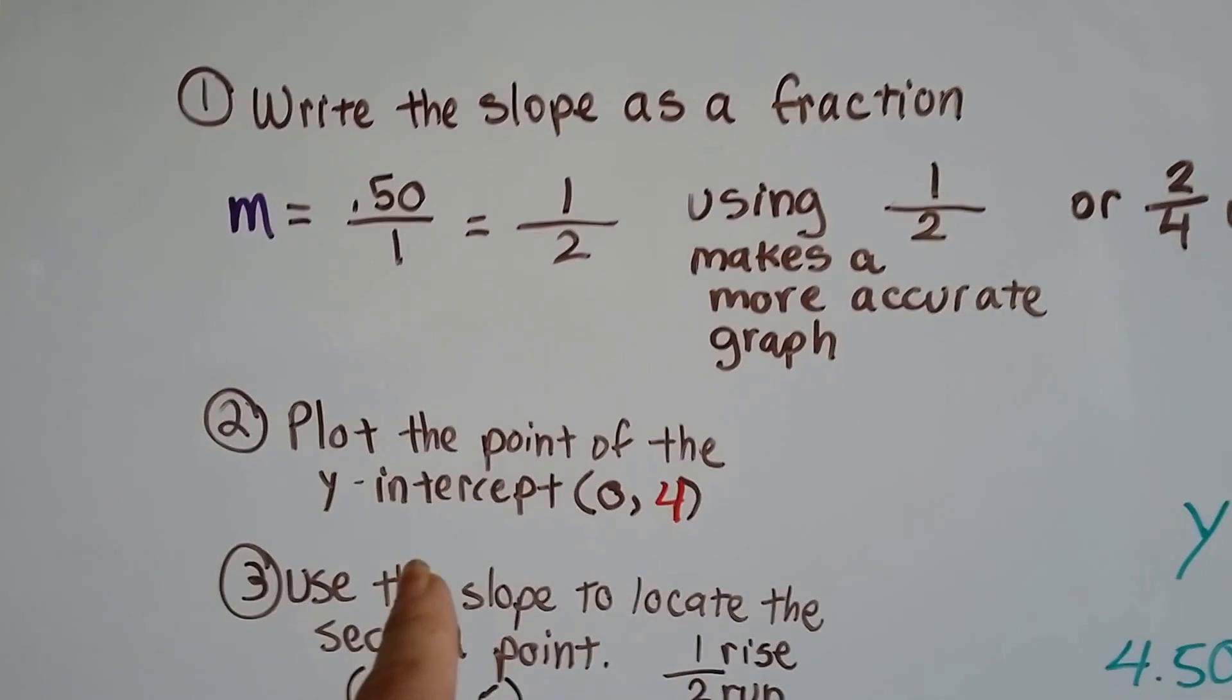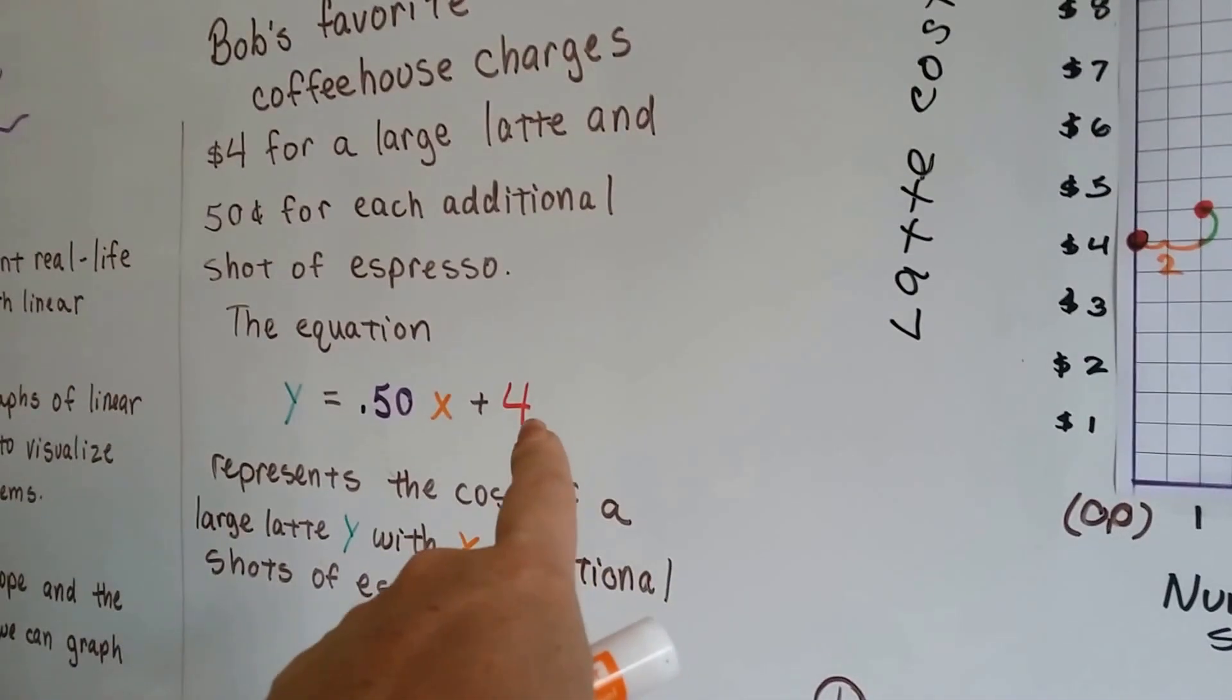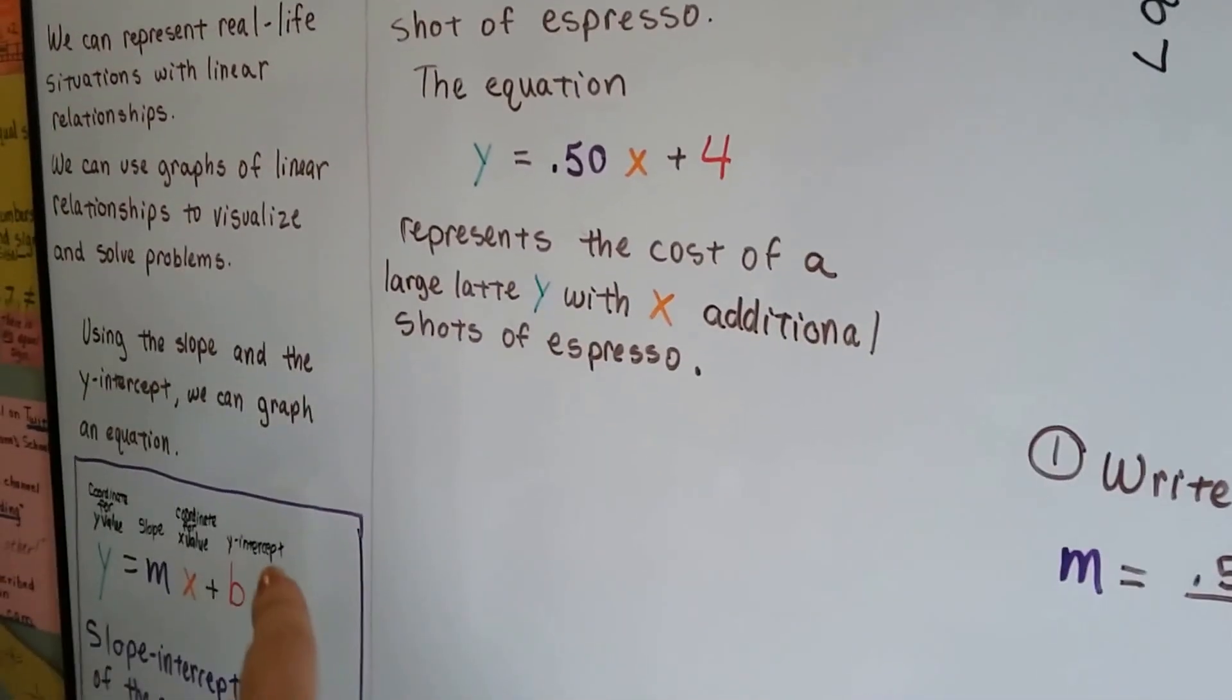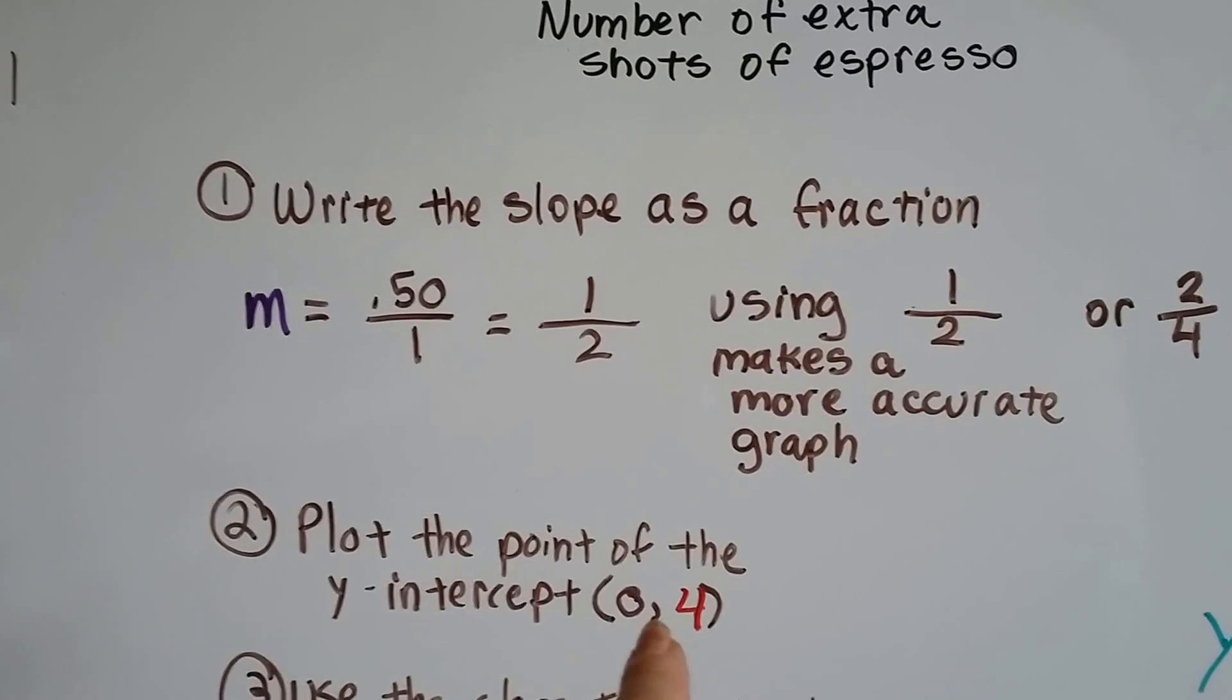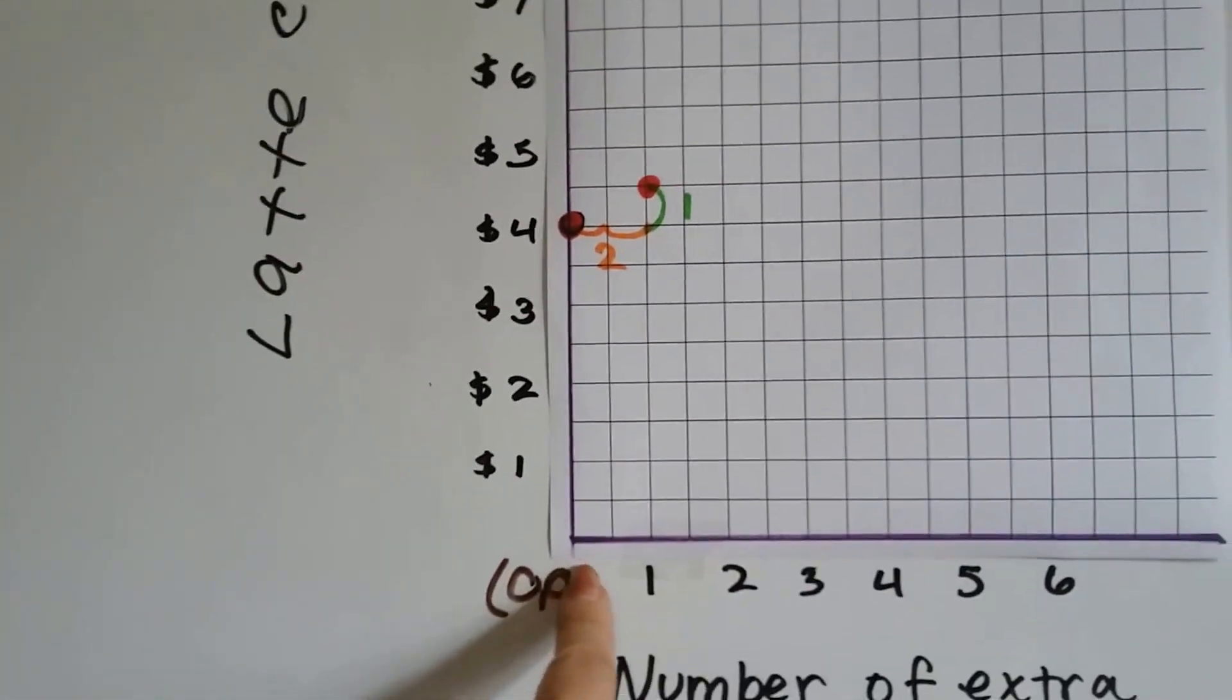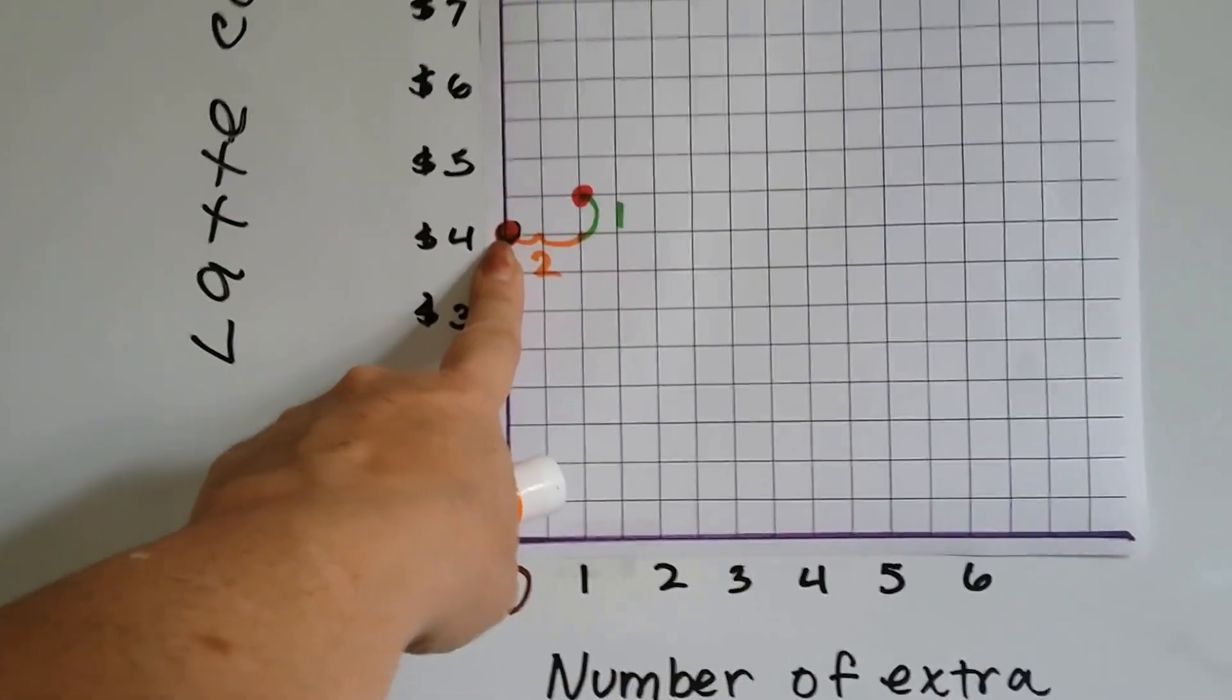Now we've got our slope written as a fraction as 1 over 2. We can plot the point of the y-intercept, which is 0, 4, because we know our b is 4. In the slope-intercept form, this b is that $4. So we plot 0, 4, which is right here. Here's $4 on the 0 line for x.